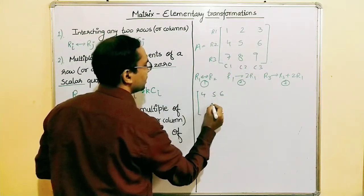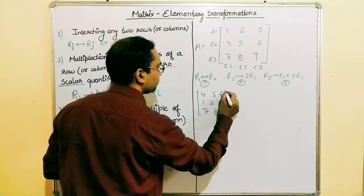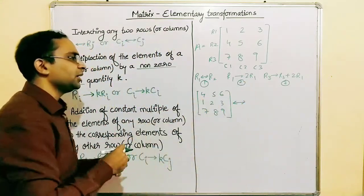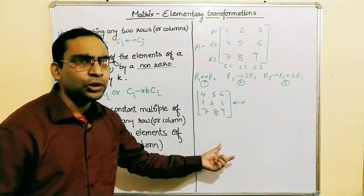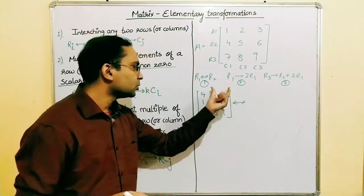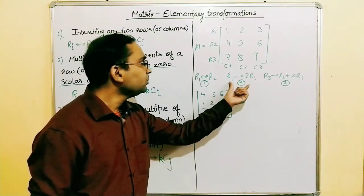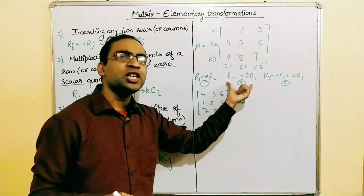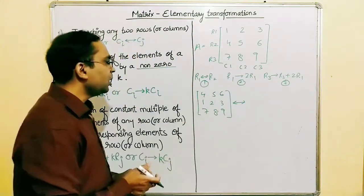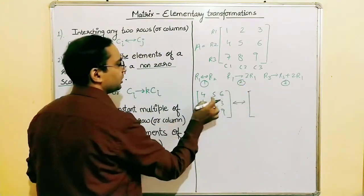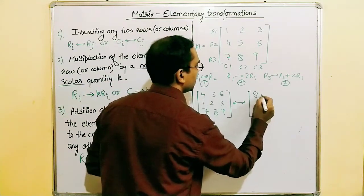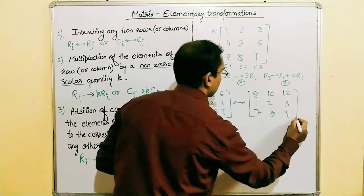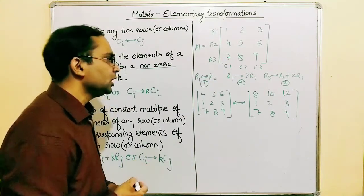Notice why sequential operation matters: after the interchange, the values in R1 have changed. If you applied the next operation to the original matrix, the result would be wrong. Always perform operations on the updated matrix. Applying operation two (R1 → 2·R1) to the updated matrix: four times two is eight, five times two is ten, six times two is twelve. The other rows remain unchanged.